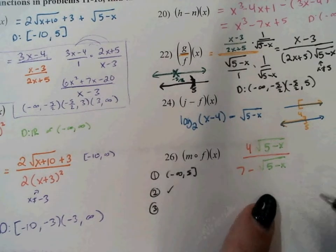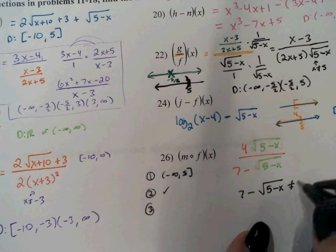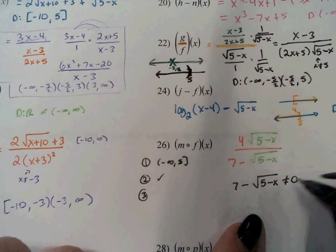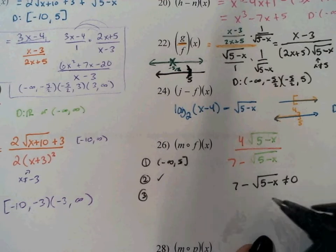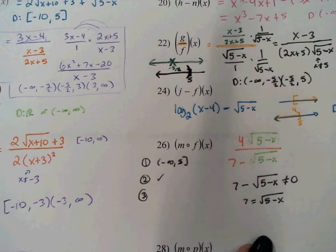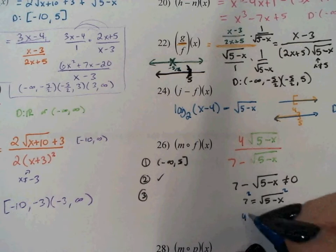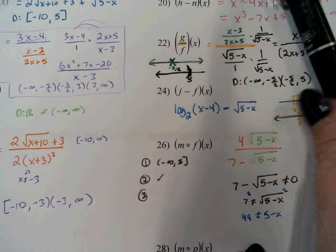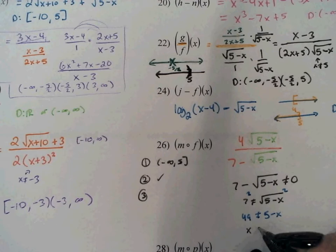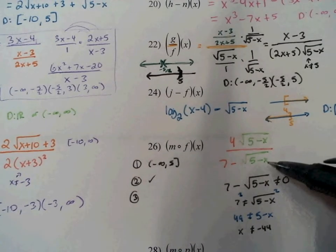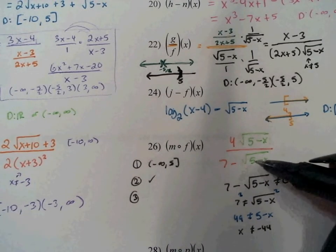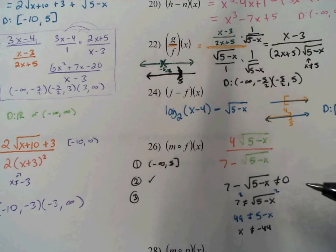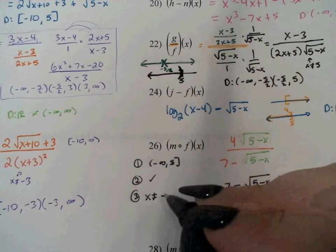To solve, I set 7 minus the square root of 5 minus x equal to 0, isolate the square root, and square both sides: 49 cannot equal 5 minus x. Adding x and subtracting 49 gives x cannot equal negative 44. Checking: if x is negative 44, then 5 minus negative 44 is 49, and the square root of 49 is 7, making the denominator 0. Confirmed: x cannot equal negative 44.